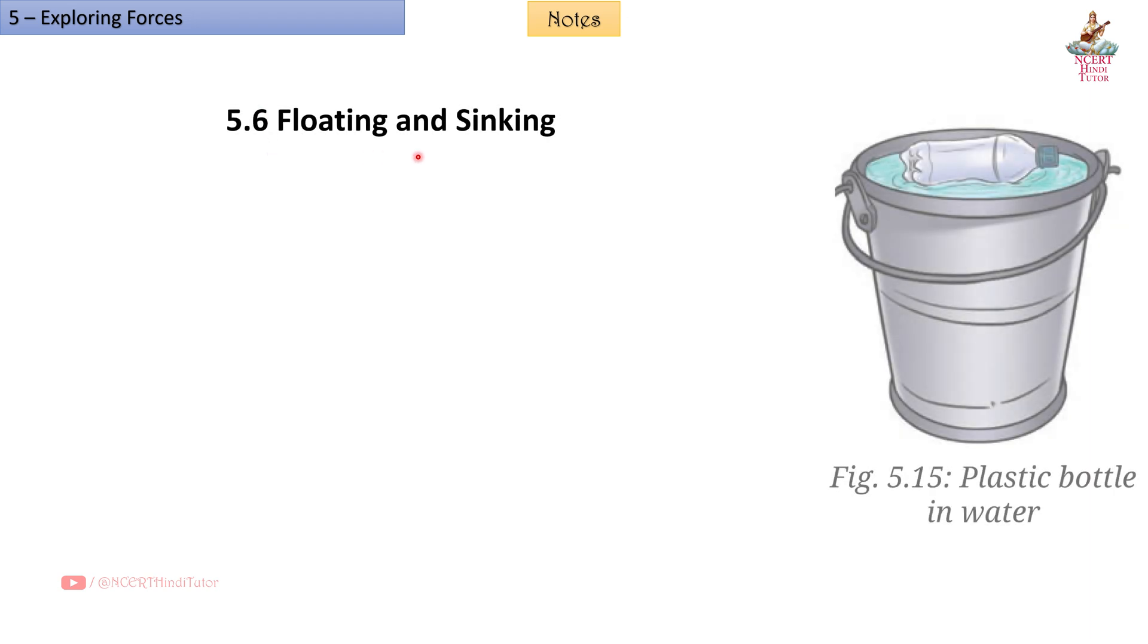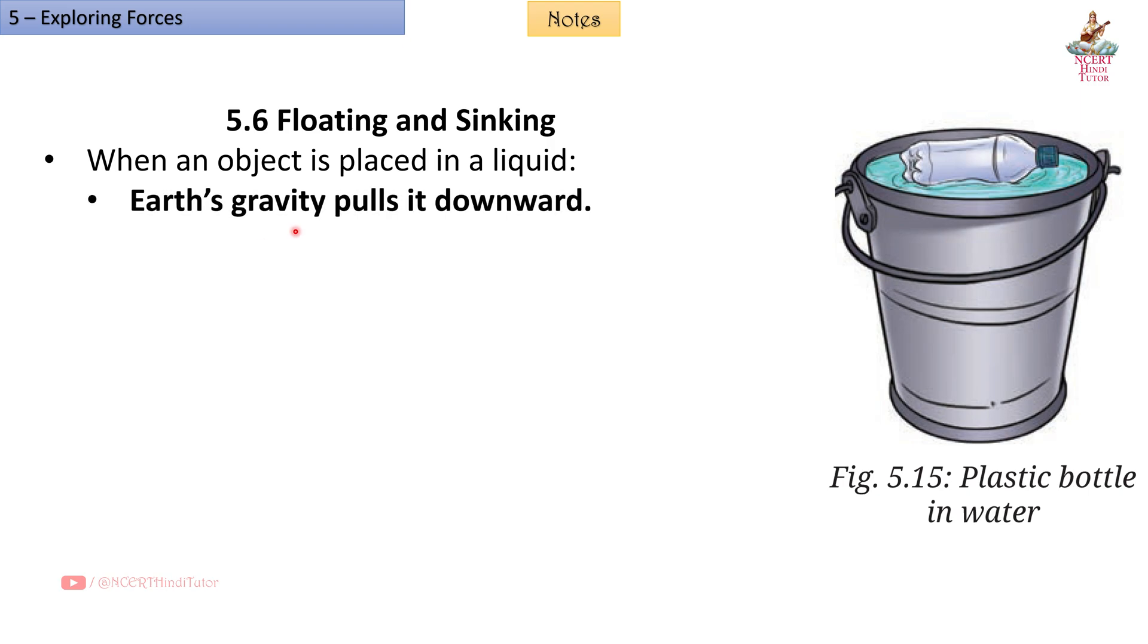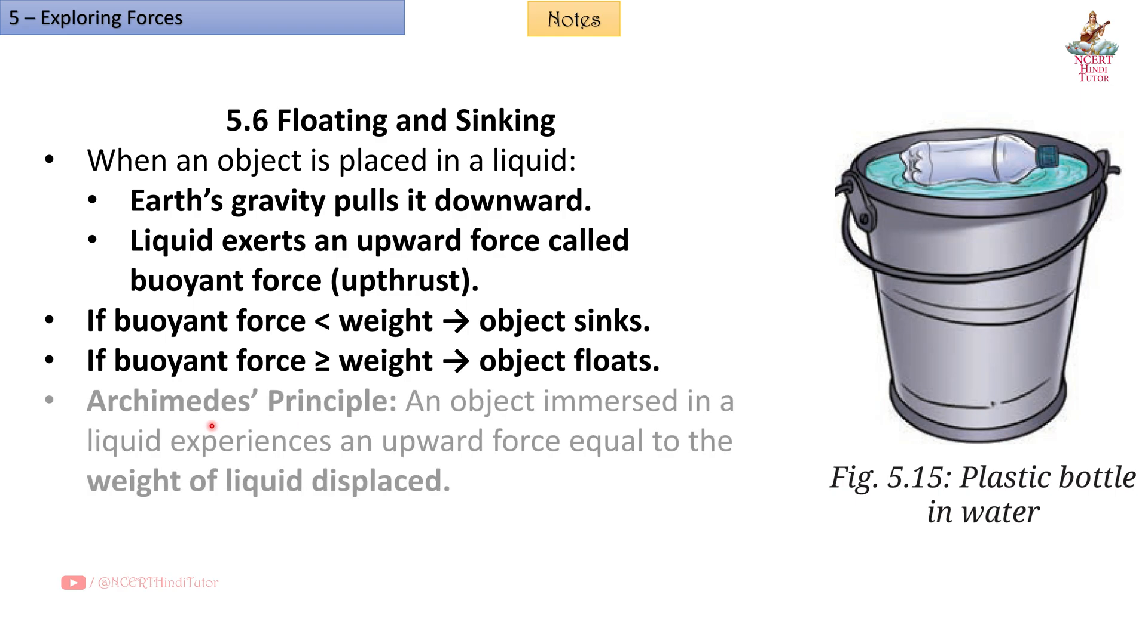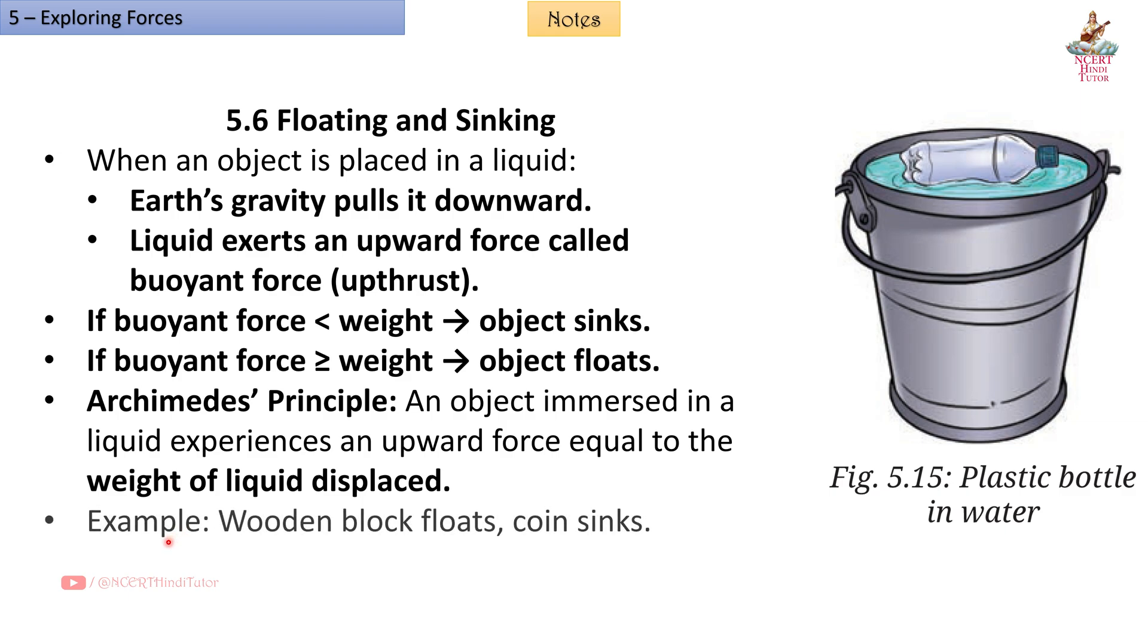5.6 Floating and sinking. When an object is placed in a liquid, earth's gravity pulls it downward. Liquid exerts an upward force called buoyant force, i.e. upthrust. If buoyant force is less than weight, object sinks. If buoyant force is greater than or equal to weight, object floats. Archimedes principle: an object immersed in a liquid experiences an upward force equal to the weight of liquid displaced. Example: wooden block floats, coin sinks.